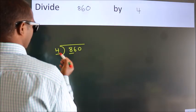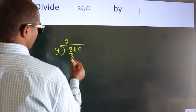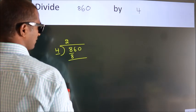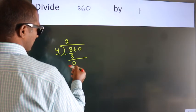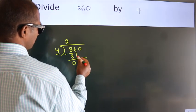Now we should subtract. We get 0. After this, bring down the beside number, so bring 6 down.